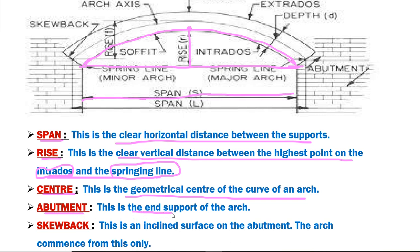Abutment is the end support of the arch. The arch is a curved structure which rests on supports, and the end supports are called abutments. In this image, the arch rests on the abutment, which is the end support of an arch.